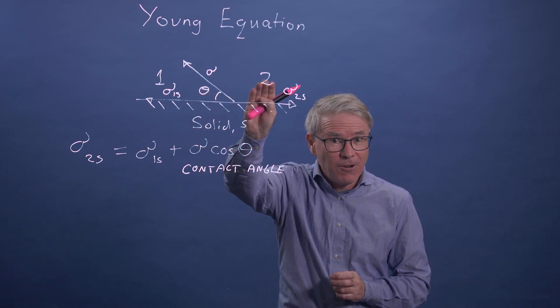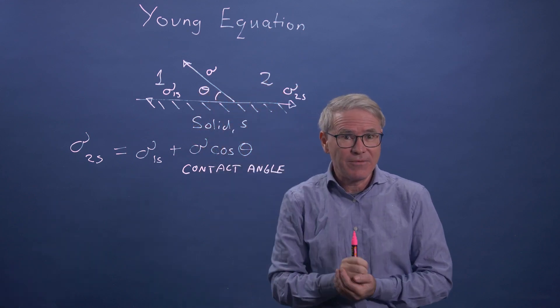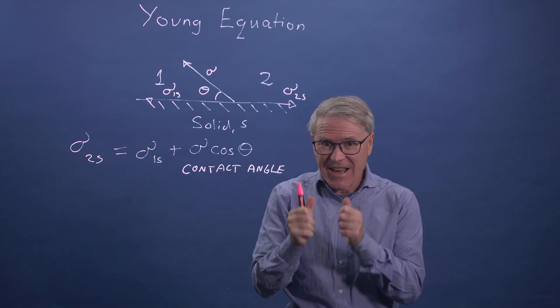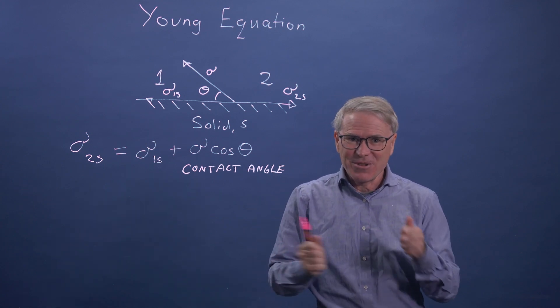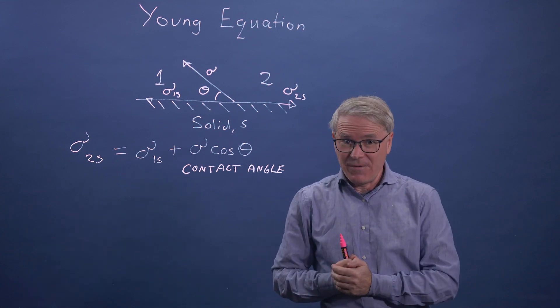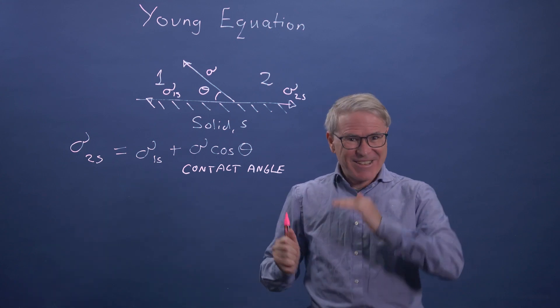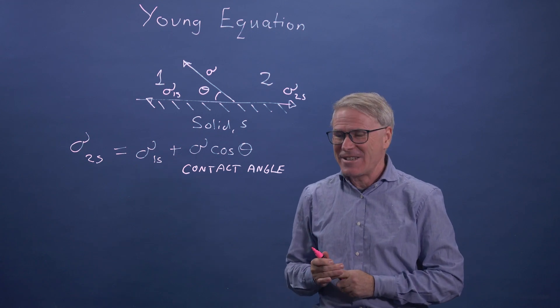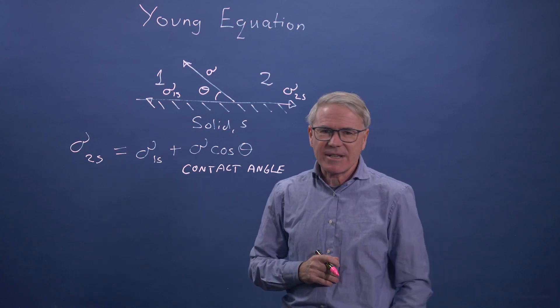If instead we have three fluids in equilibrium with a three-phase contact line, we do actually have to have both a horizontal and a vertical force balance, and we come across that when we look at three-phase flow. But when it's a solid, the solid stays more or less flat. So this is the contact angle.